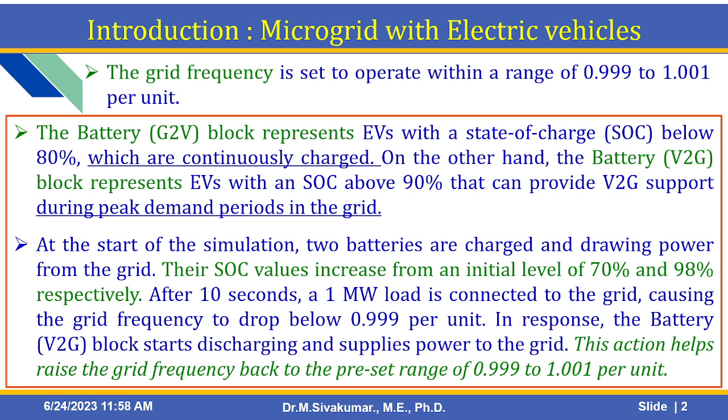This causes the grid frequency to drop below 0.99 per unit. In response, the V2G battery block starts discharging and supplies power to the grid. This action helps raise the grid frequency back to the preset range of 0.999 to 1.001 per unit. This is our objective of this example.